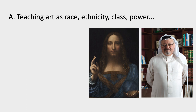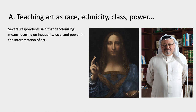The first strategy would be teaching art as race, ethnicity, class, or power — or for race, ethnicity, class, or power. In other words, not teaching for masterpieces or for aesthetic values, but teaching in order to talk about race, ethnicity, class, and power. Several of the respondents to the survey said that decolonizing means focusing on these issues in the interpretation of art.